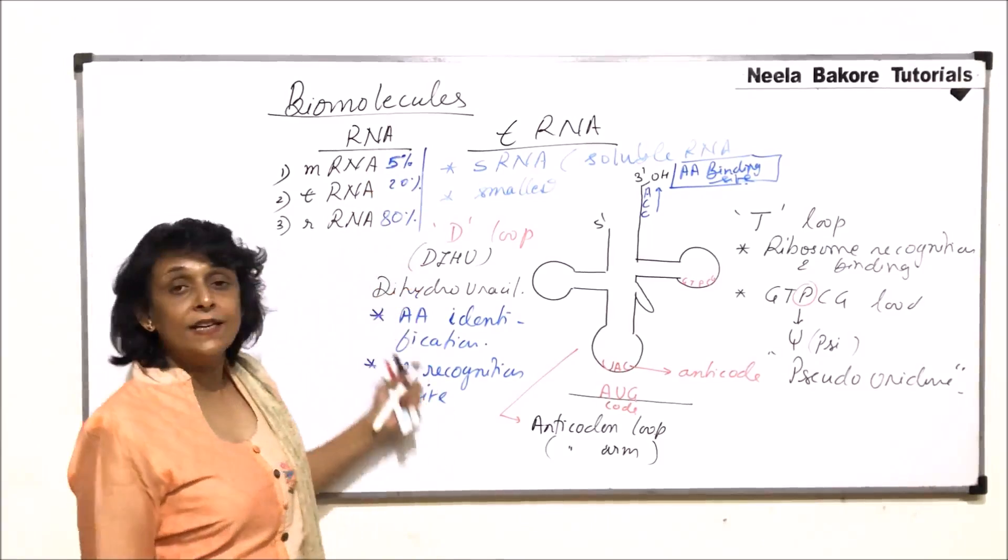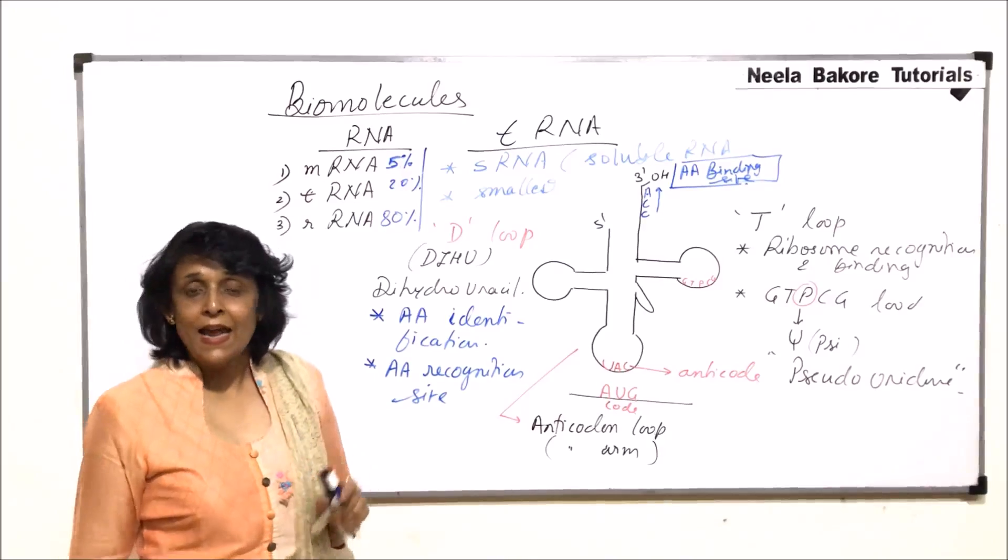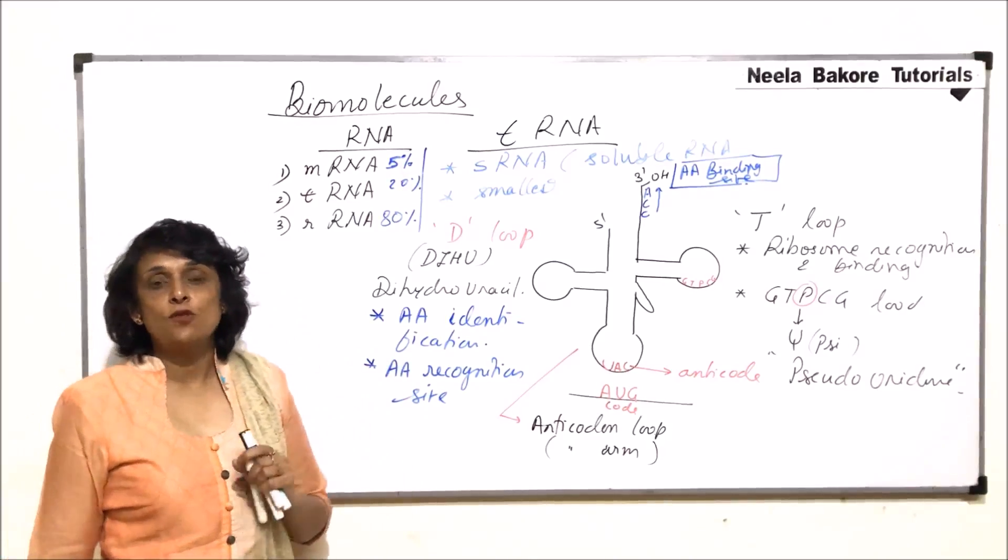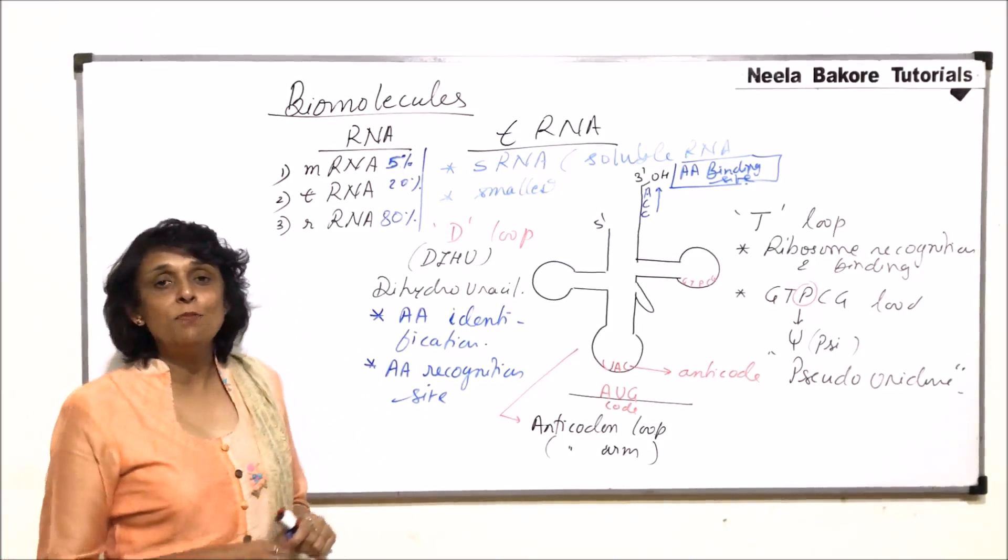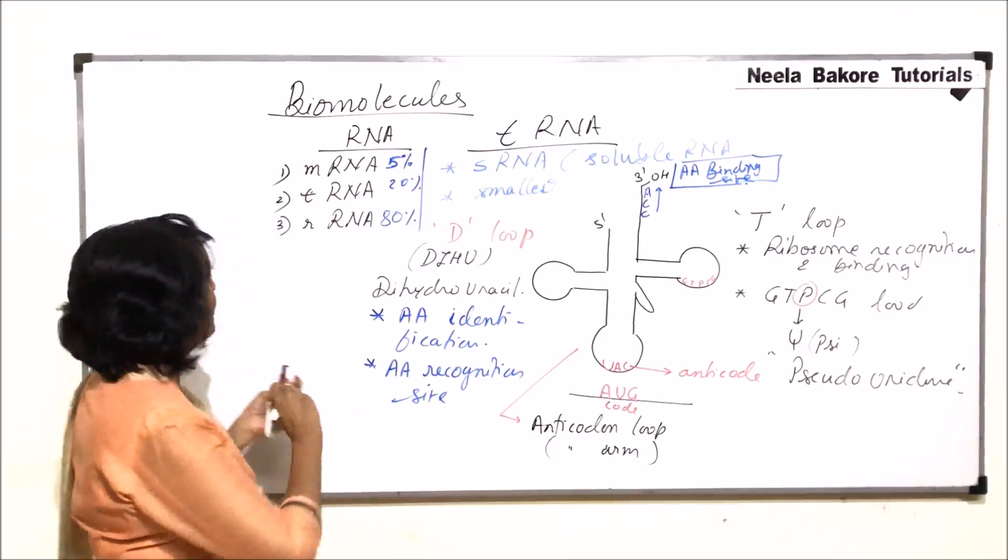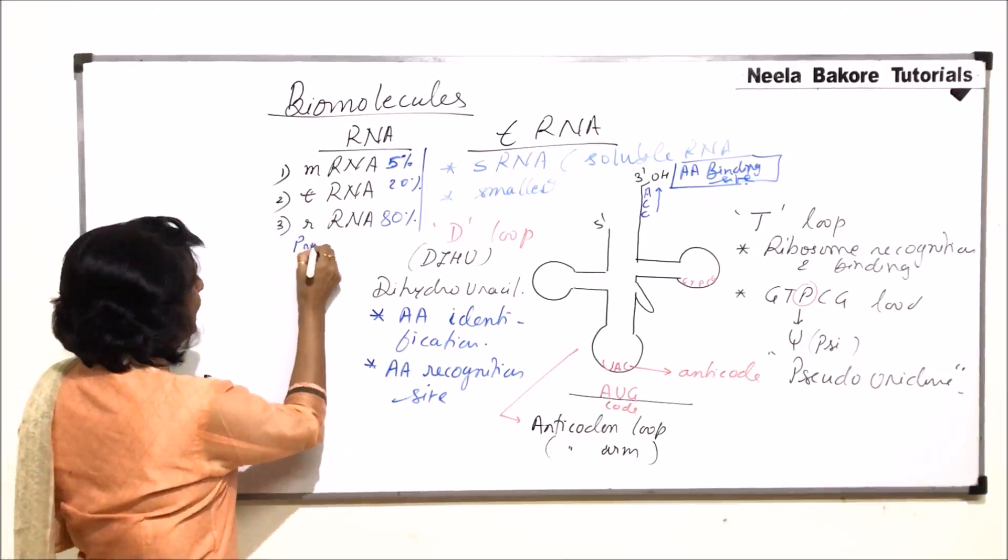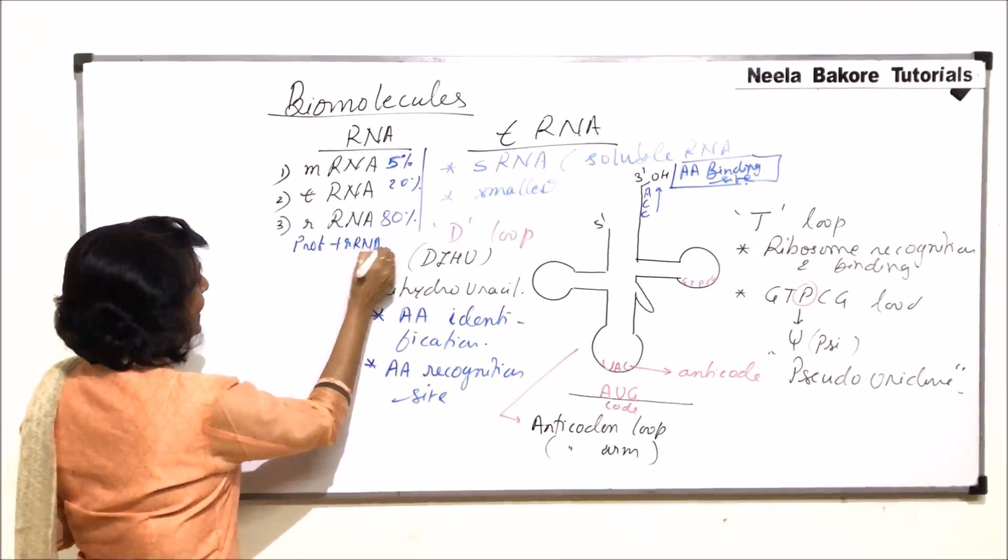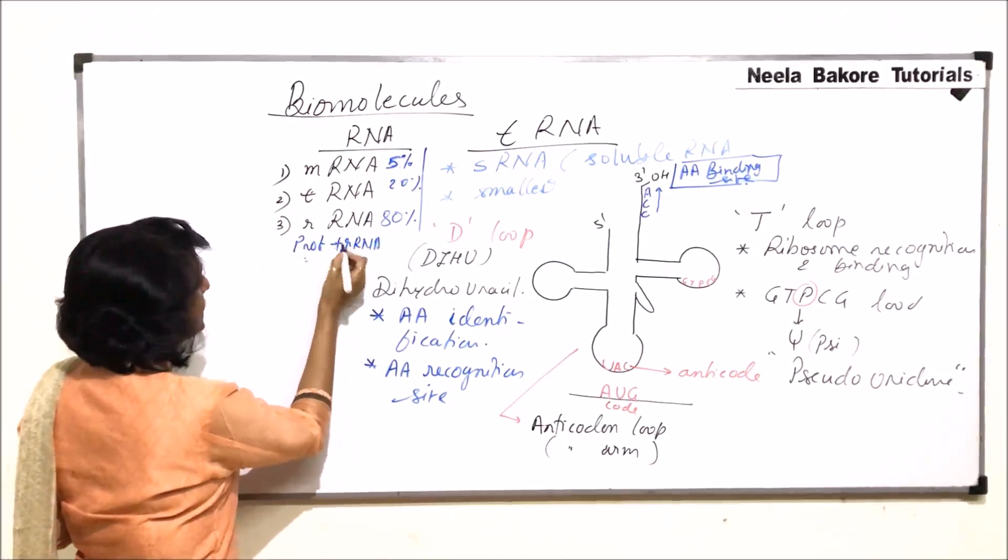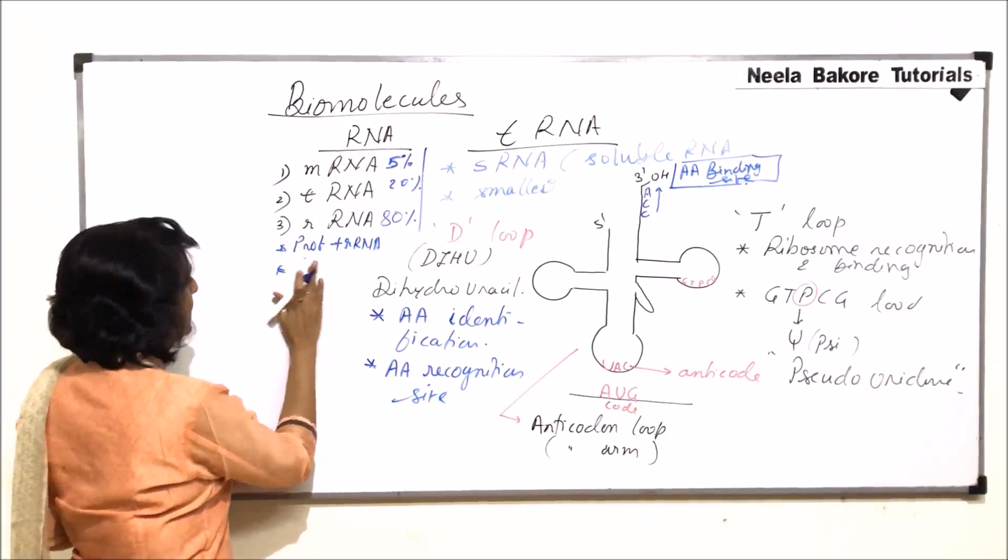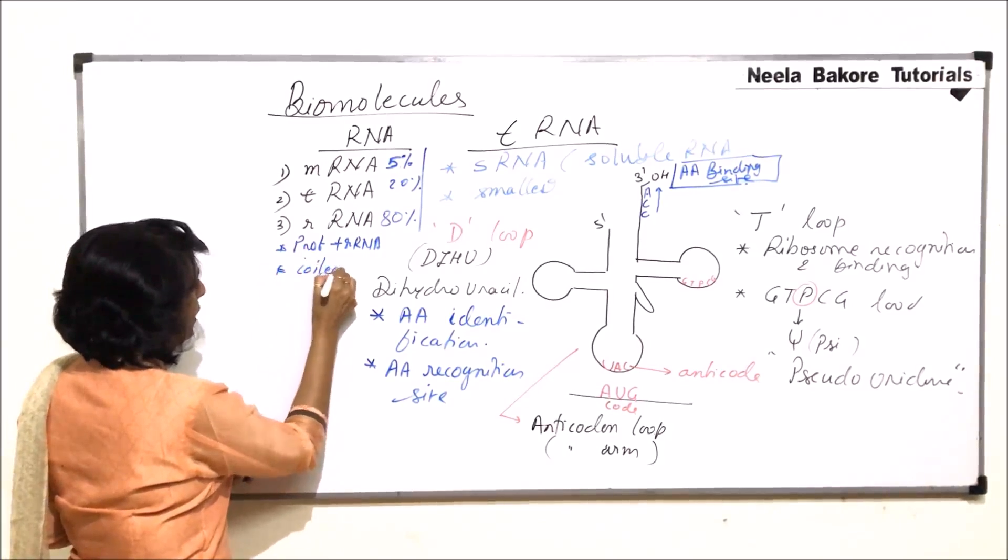After this we will talk about rRNA and we can discuss it here itself because the structure of rRNA has not been clearly explained yet. But we just know that it is made up of proteins plus rRNA and it is a coiled structure.